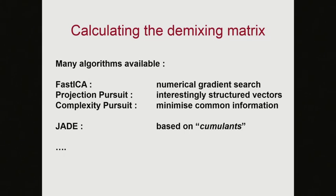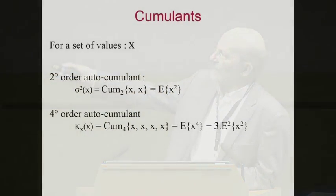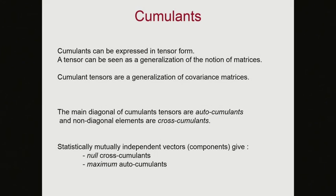JADE was developed by Cardoso and Souloumiac in 1993. It's a technique based on the construction of a hypercube of fourth-order cumulants. I'm a chemometrician, not a statistician — I'd never heard of cumulants until I discovered JADE. But like Monsieur Jourdain, I discovered I'd been using cumulants without knowing it. A second-order auto-cumulant is the variance; a fourth-order auto-cumulant is the kurtosis. You can also have cross-cumulants.